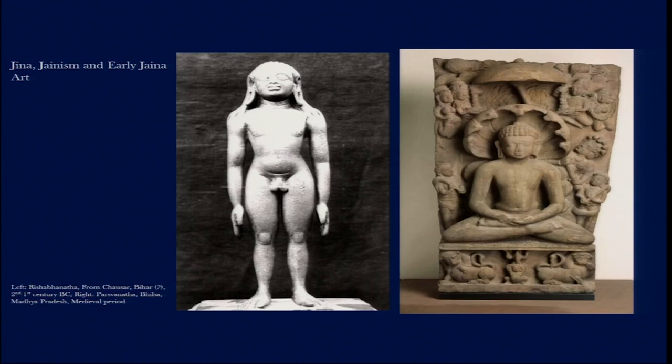The Jain Tirthankaras are represented as nudes, because there were three prime concepts at the core of Jain belief: non-violence, abandonment, and non-attachment. The abandonment of material life makes an impact on these figures — they are not associated with ornaments, royal robes, or any kind of textiles, and they are not attached to material pleasure. Showing them as stark nude is part of their larger ideology.